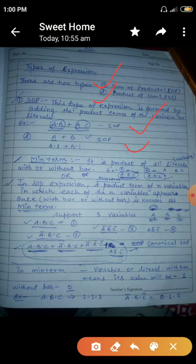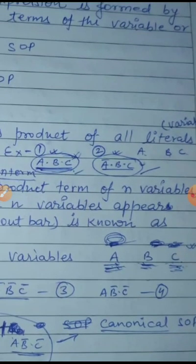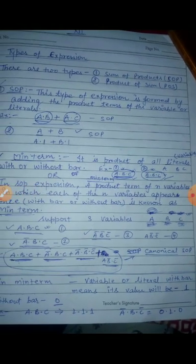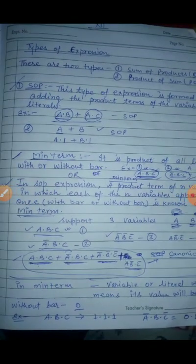Suppose you have three variables a, b, c. The product of all three — a dot b dot c — is a minterm. And a-bar dot b dot c is also a minterm, because a appears here with its complement. So with or without complement, when you find the product of all literals, it is called a minterm.